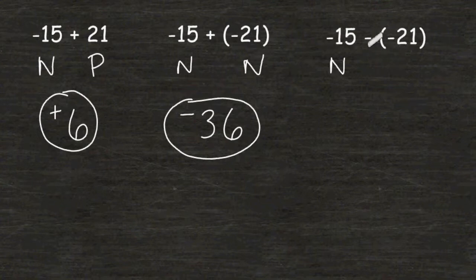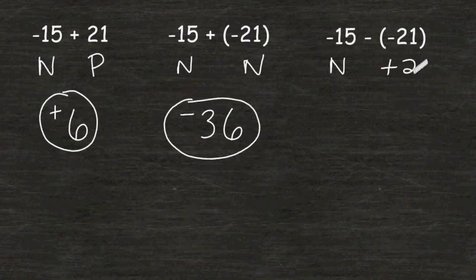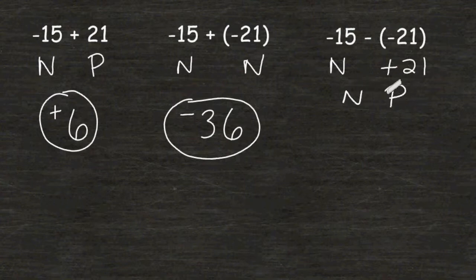The opposite of subtracting 21 is to add 21. So really, we have a negative and a positive with this situation. And whenever the signs are different, we have to find the difference of the absolute values.